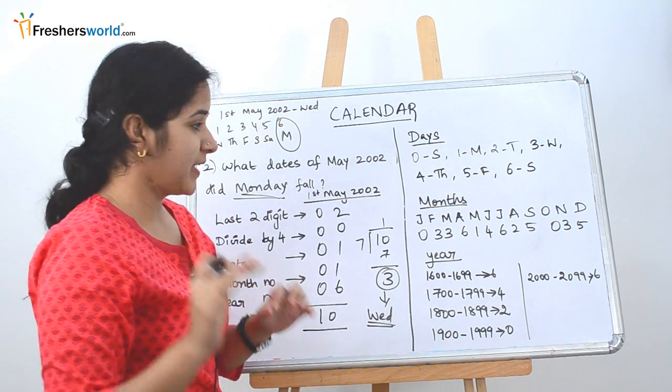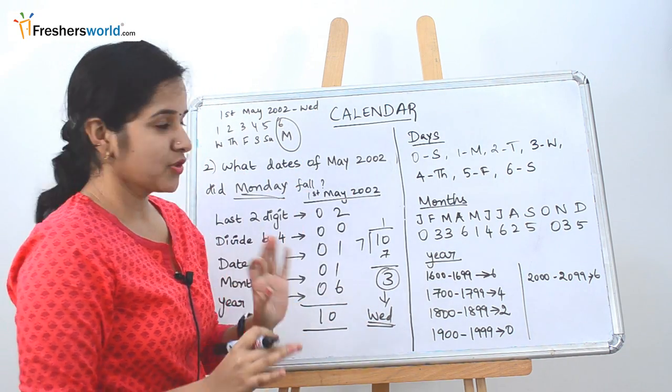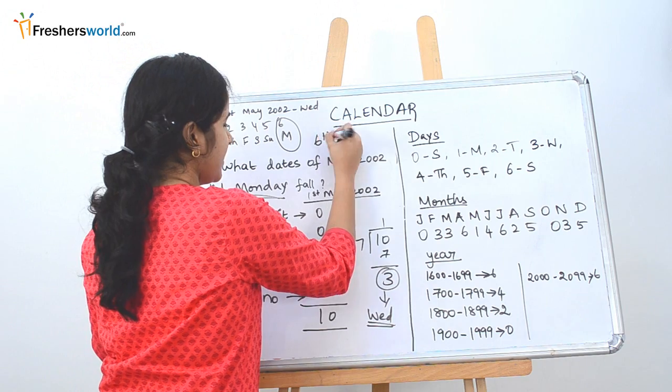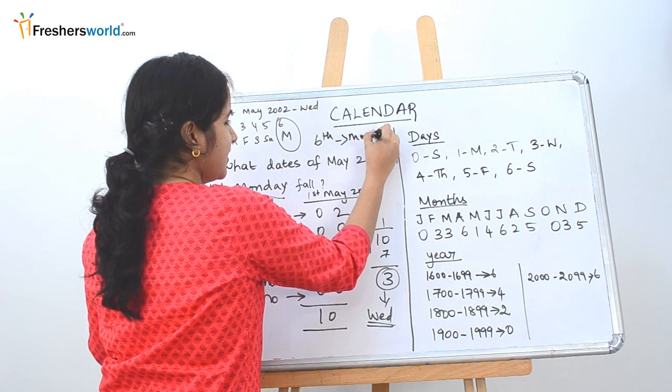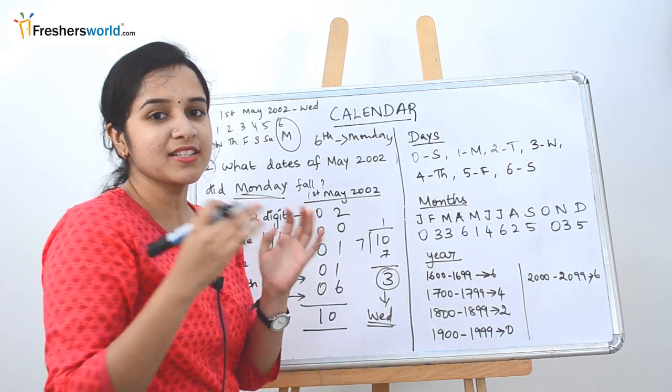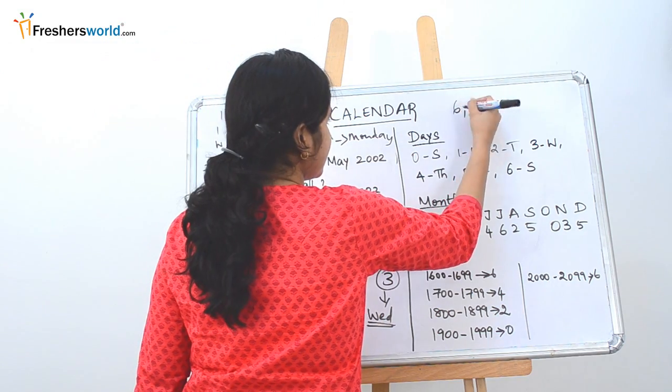So the question they have asked for is Monday. So the 1st Monday falls on for May is on 6th. So we know that 6th is definitely a Monday. How to find the other days? It's very simple. You have to just add 7 to it. So 6th,